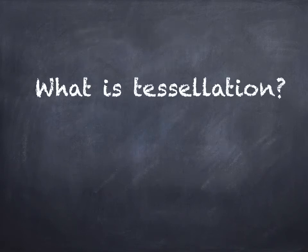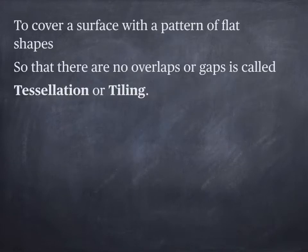What is tessellation? To cover a surface with a pattern of flat shapes so that there are no overlaps or gaps is called tessellation or tiling.